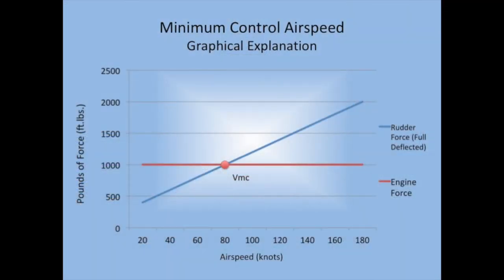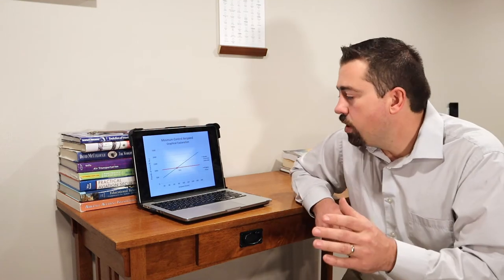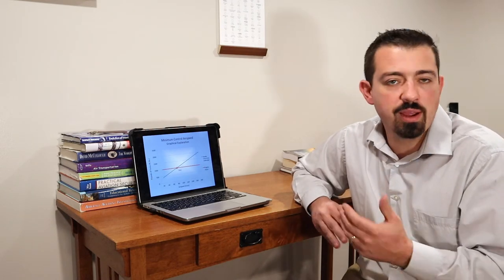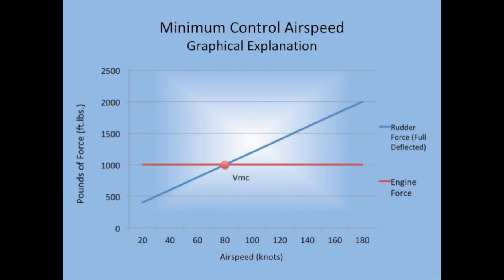Let's look at a graphical explanation of VMC. This is one of my favorite ways to look at it because it really clearly shows you the importance of VMC and the loss of control of the aircraft. If the engine forces are producing a thousand foot-pounds of force, which is the red line you see on the graph, and the rudder is at full scale deflection for various airspeeds, we can see that the rudder is a function of airspeed while engine forces remain constant because we're at maximum power regardless.